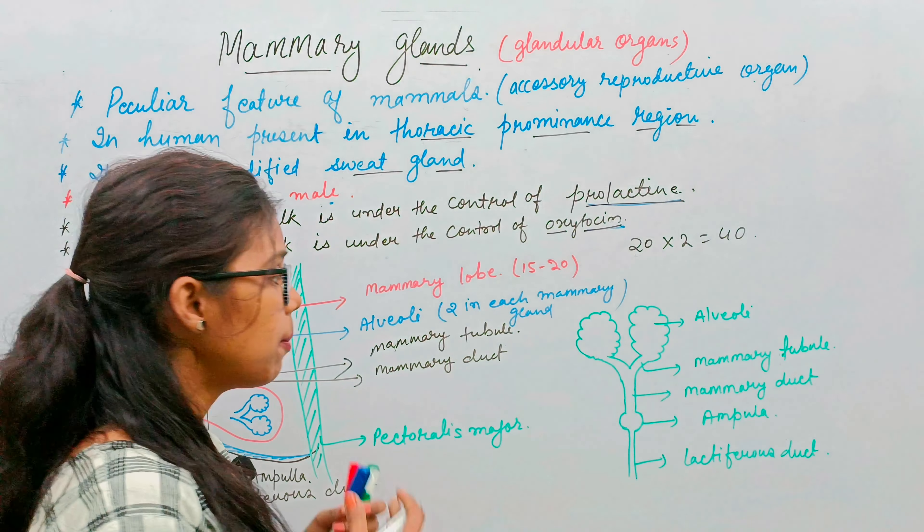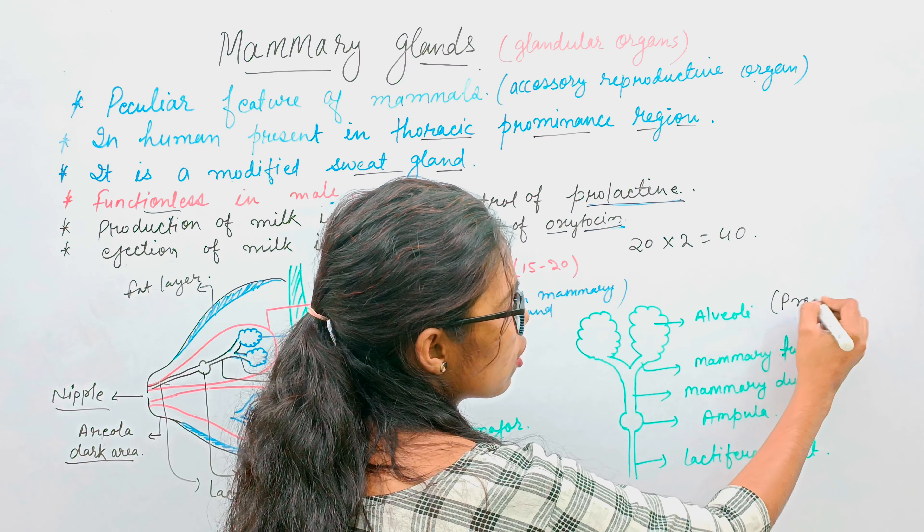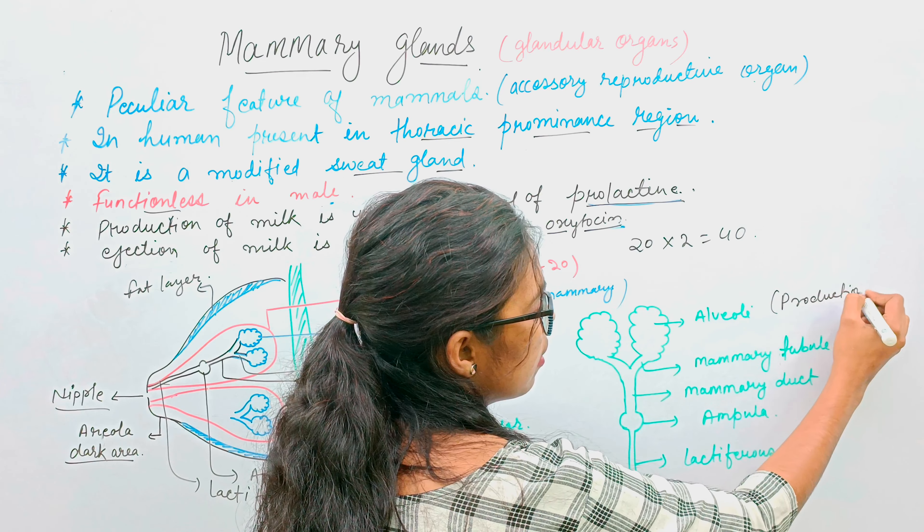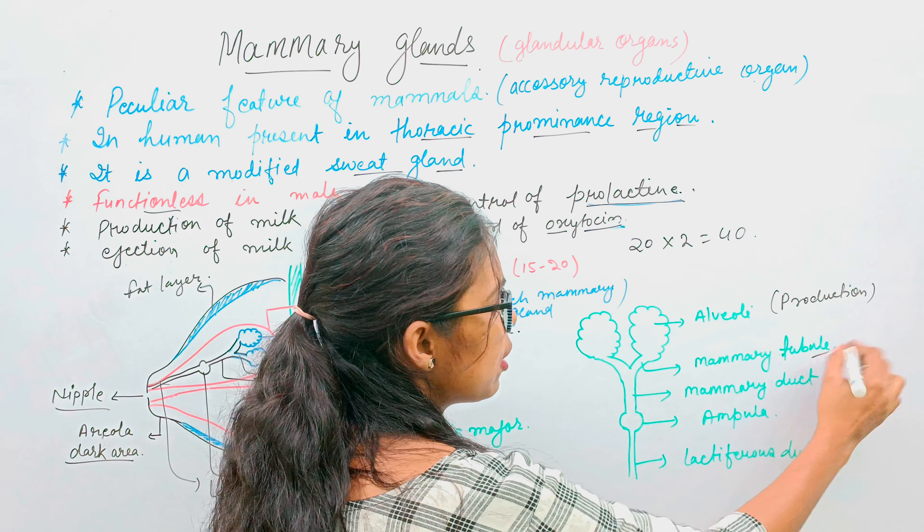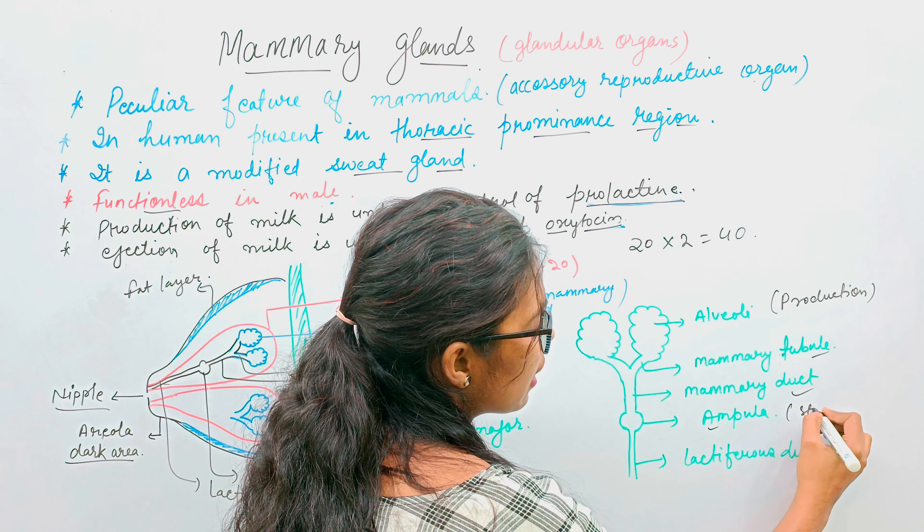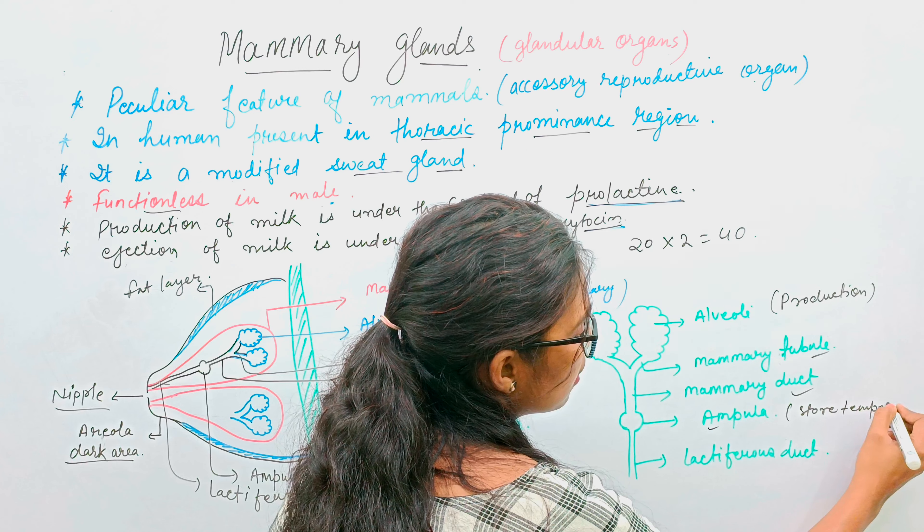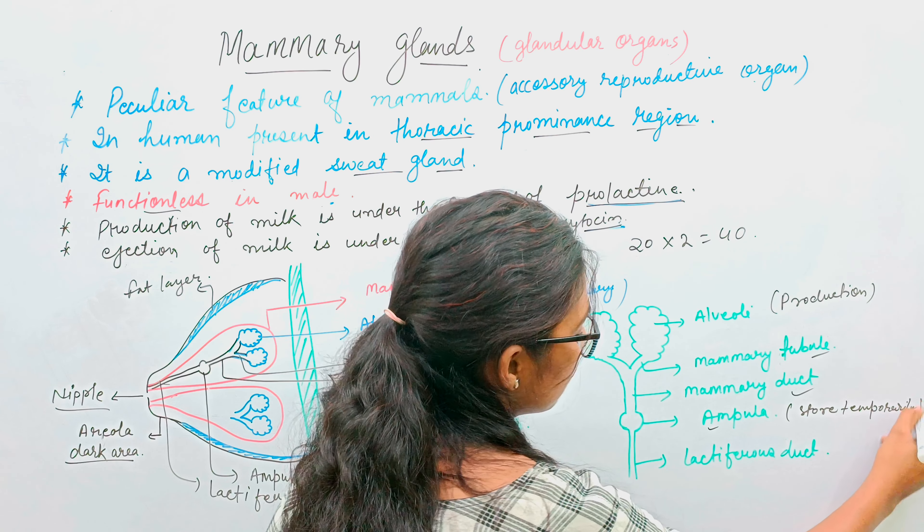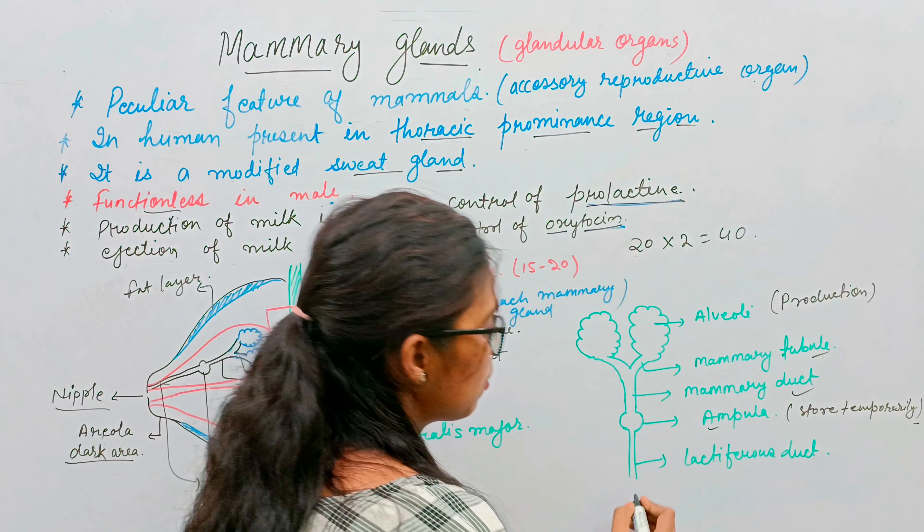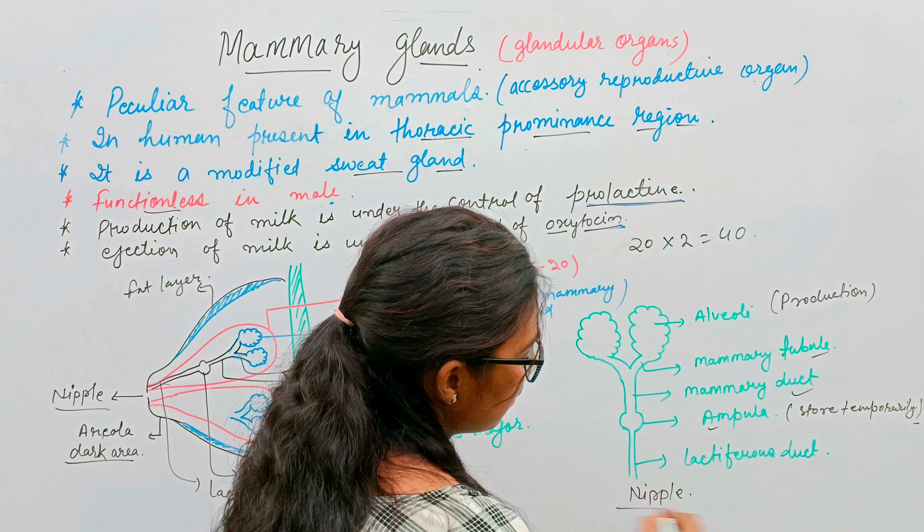If we talk about the pathway of milk, milk is produced in the alveoli, then comes from the mammary tubule, then mammary duct, then ampulla where it is stored temporarily, then lactiferous duct, and then released from the nipple.